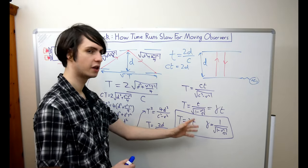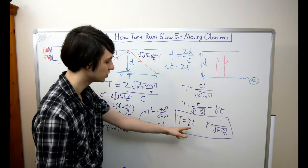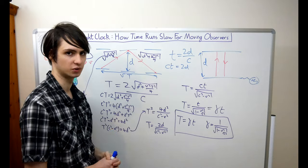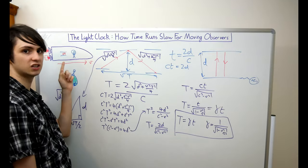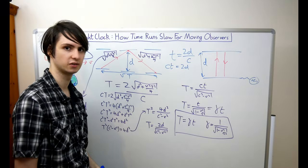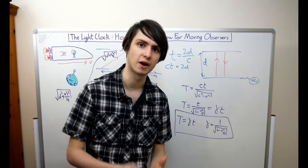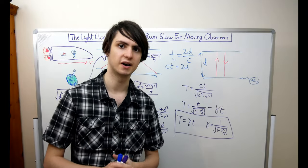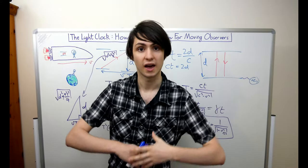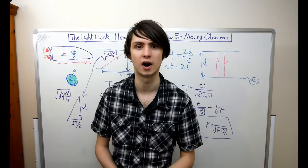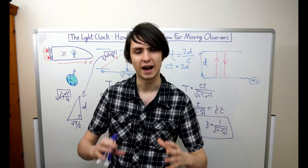Now the gamma factor is always larger than one. This means the time between ticks as measured by the observer on earth is always larger than the time between ticks as measured by the astronaut. They see the light clock ticking at a slower rate than the astronaut does. If you see a moving clock you'll see it tick at a slower rate than you would expect, but this doesn't just apply to the light clock — this applies to everything else on the spaceship too. The observer on earth will see everything in the spaceship lasting a longer time than would be expected if the spaceship were stationary. Everything will look as if it's in slow motion.